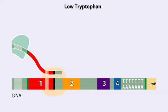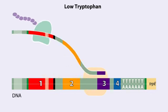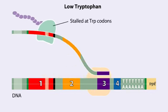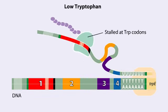When tryptophan is scarce, the ribosome stalls at the tryptophan codons. Therefore, region 2 is not covered when region 3 is transcribed, allowing regions 2 and 3 to form a hairpin that does not terminate transcription. Because region 3 is paired with region 2, it cannot pair with region 4 and form an attenuator.